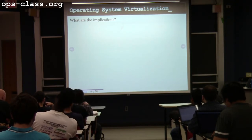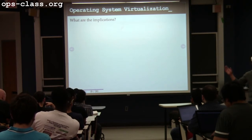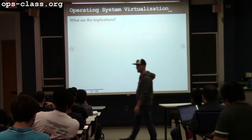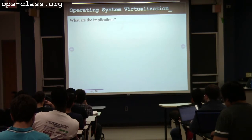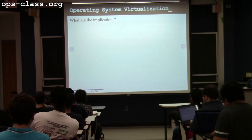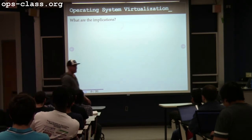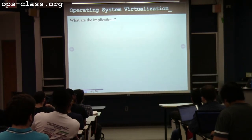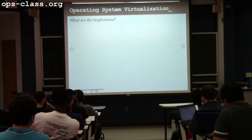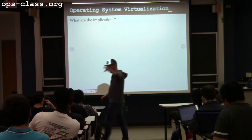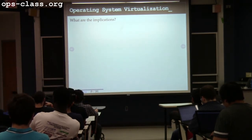What are the implications on the container and the software that runs inside it? I've gone up a level — virtualization always happens across some interface. Before, I was virtualizing the hardware interface; now I'm virtualizing the operating system interface. That has implications on what's below it. Software inside the container can run different versions, but the physical machine is still the same. I've moved the virtualization interface up one level.